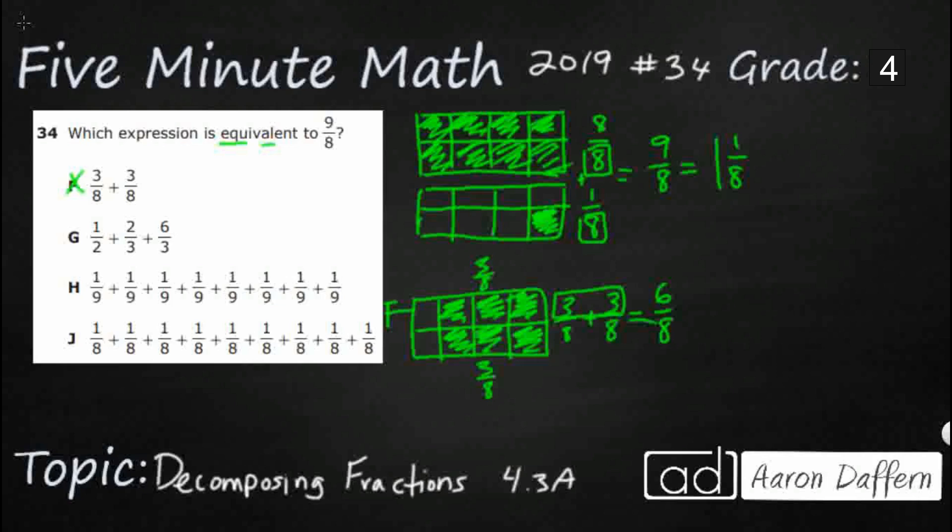Now, the key here is we need to have the same denominator. You notice that on the first two, we're dealing all with eighths. So that's where we're going to have a problem with G. I'm not even going to bother adding G because take a look at it. We've got a half in there. So you can't just add a half with a third and a third. You need to have the denominator to be equivalent all the way across. And that's what's tricky about this because if you add up 1 and 2, that makes 3. Add up to 6, you get 9. But it's wrong on two different counts. Number one, the denominators are all different. Number two, none of them are even 8. I guess 2 and 3 and 3 add up to 8, but that's just kind of weird. That's not how we add.